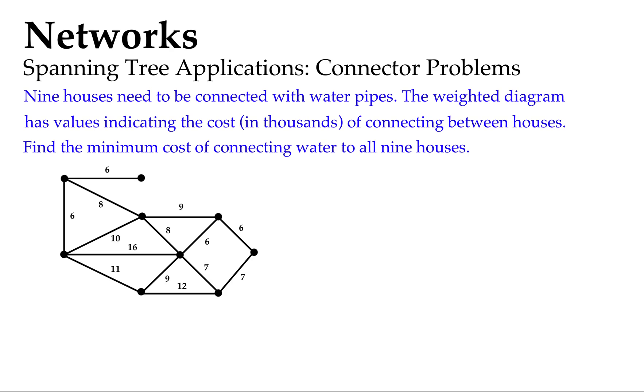So here we go. Each of the vertexes are houses and each of the numbers indicate how much it's going to cost in thousands, such as 9,000, 8,000, 10,000, etc., to connect between the houses.